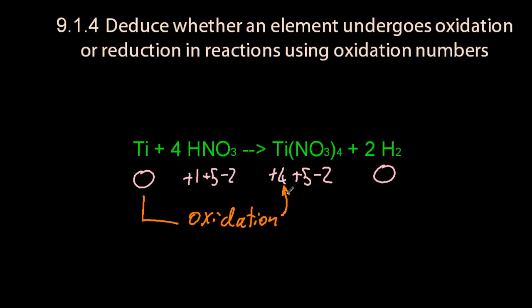So titanium has undergone oxidation, it's lost electrons. Oxidation number's gone up, and hydrogen has gained electrons. The oxidation number's gone down. It's a little confusing, but I think you'll get it.